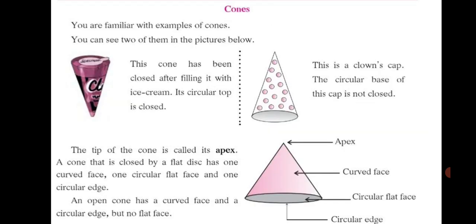Let's learn about cones. You can see two examples in the pictures. The first one has been closed after filling it with ice cream — its circular top is closed, so that's a closed cone. The second one is a clown's cap where the circular base is not closed; it's open. The tip of the cone is called its apex. A closed cone has one curved face, one circular flat face and one circular edge. An open cone has a curved face and a circular edge but no flat face.